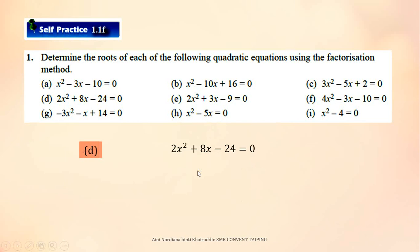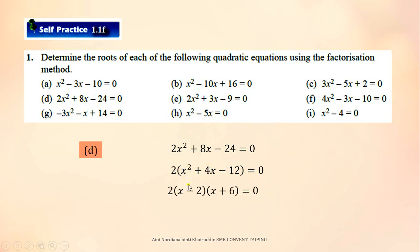For D, have a look at this example. Since you see the values 2, 8, and 24, you first take out 2 from the equation. You put 2 in front of the bracket, then inside the bracket you do the factorization. The answers will be 2 and negative 6.